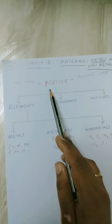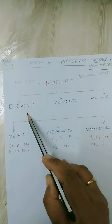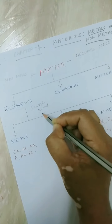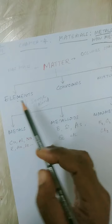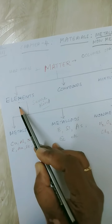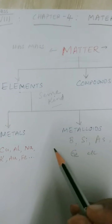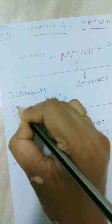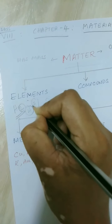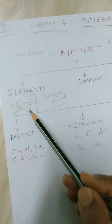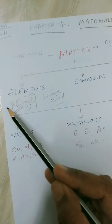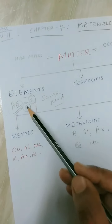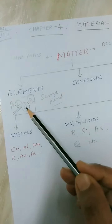Elements are the purest forms of matter which consist of the same kind of atoms. For example, hydrogen element consists of two atoms of hydrogen. Two atoms of hydrogen together constitute one molecule of hydrogen — that is nothing but the element. Can you see any other type of atoms here? It is only hydrogen atoms that are present.